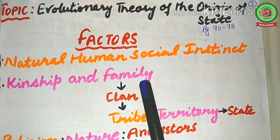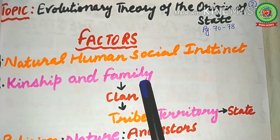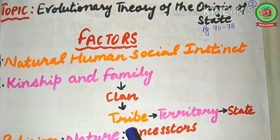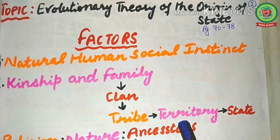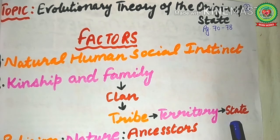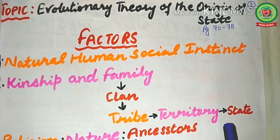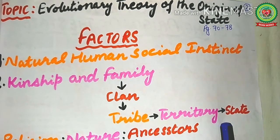The second factor is kinship and family. Kinship acted as the strongest bond of unity. Reproduction instinct and blood relationship gave birth to the family. The family grew into a clan, and the clan grew into a tribe. There became a head of the tribe, who was forced to settle on a piece of territory, and all this gave birth to the state — it was a natural birth of the state.